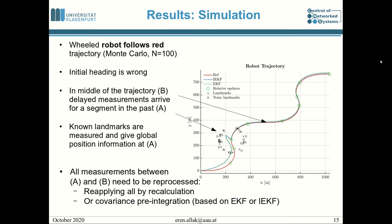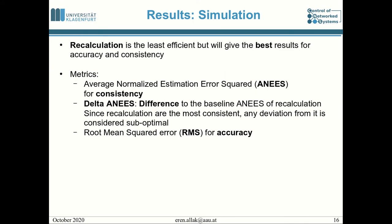We tested our algorithm in simulation and with real data. In simulation, wheeled robots follow the red trajectory, and we performed 100 Monte Carlo runs. The initial heading is wrong, and at point B in the middle of the trajectory, delayed measurements arrive for a segment in the past. Known landmarks provide global position information at point A. All measurements between points A and B then need to be reprocessed — either by recalculating all measurements, or by covariance pre-integration based on the EKF or IEKF formalism. Recalculation is the least efficient but gives the best accuracy and consistency.